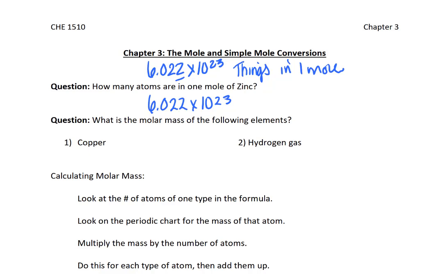If you change from atoms to something different like molecules, how many molecules are there in a mole of water? 6.022 times 10 to the 23rd.